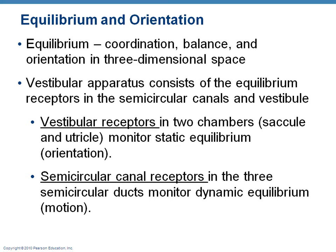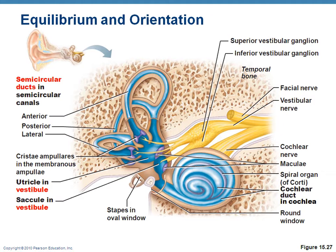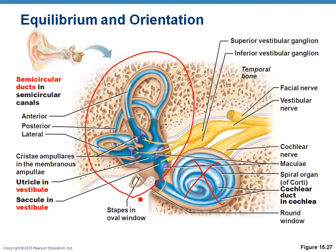The semicircular canal receptors, which contain the crista ampullaris, monitor dynamic equilibrium — angular or rotational motion. There are three semicircular ducts, each with a crista. So static equilibrium and linear acceleration are handled by the vestibular receptors, while dynamic or angular motion is handled by the semicircular canal receptors.